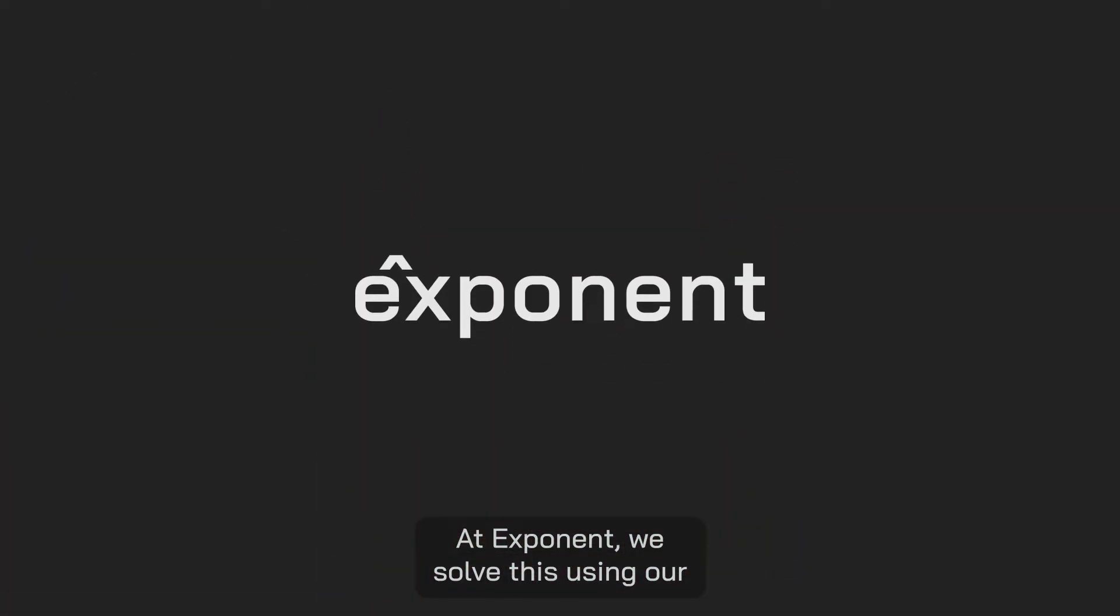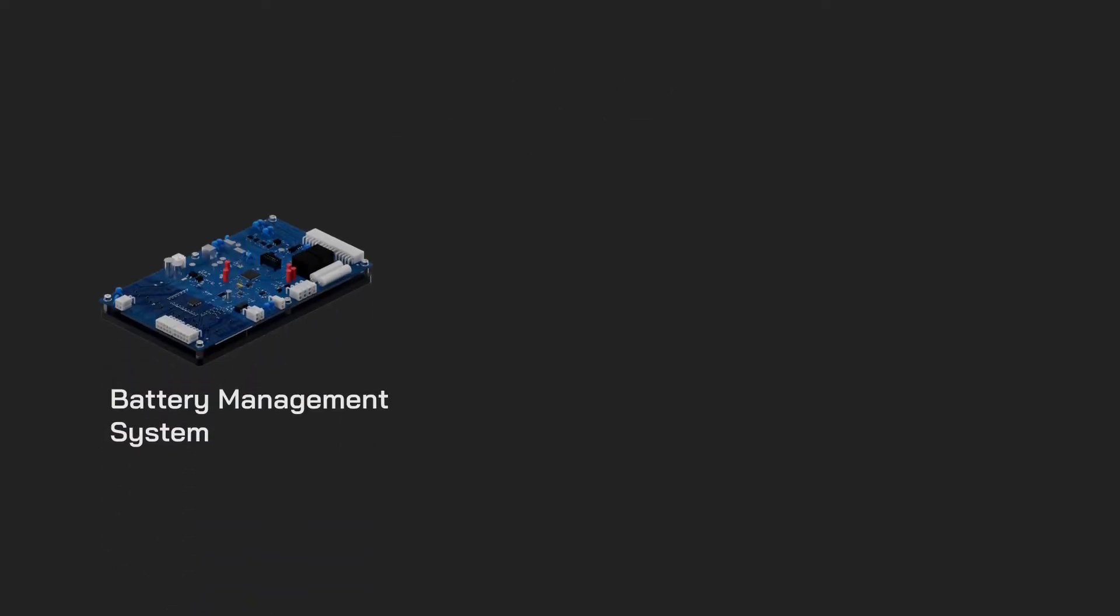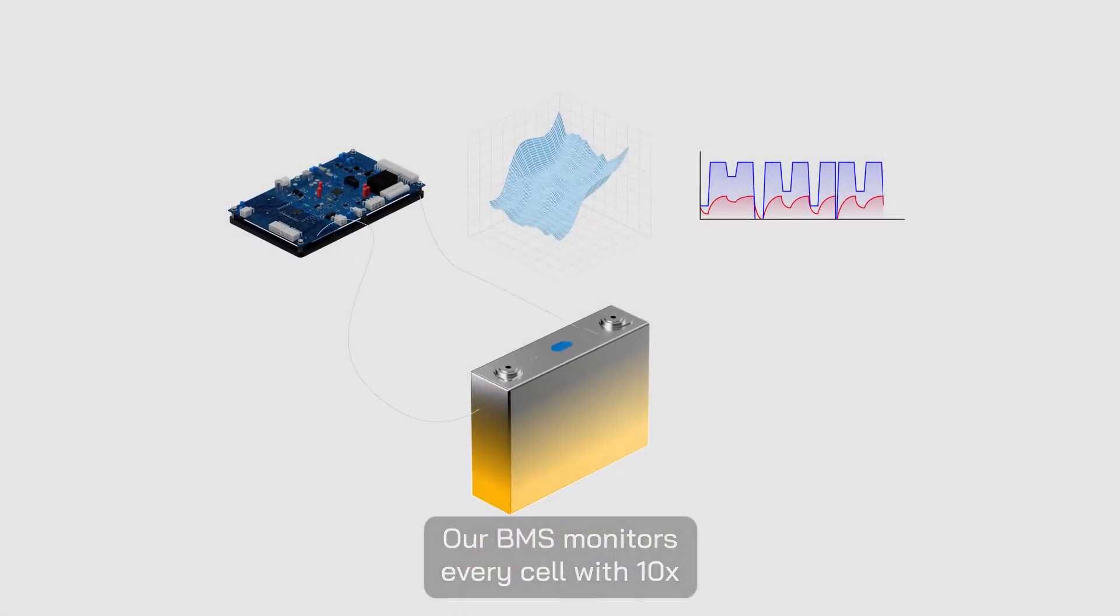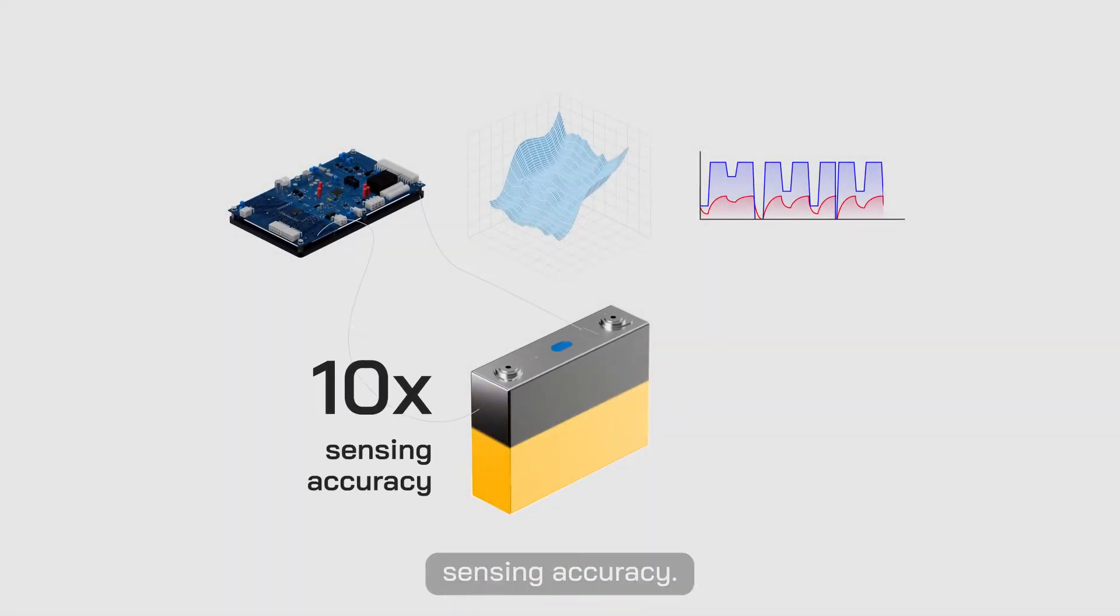At Exponent, we solve this using our battery management system, virtual cell model and dynamic charging algorithms. Our BMS monitors every cell with 10x sensing accuracy.